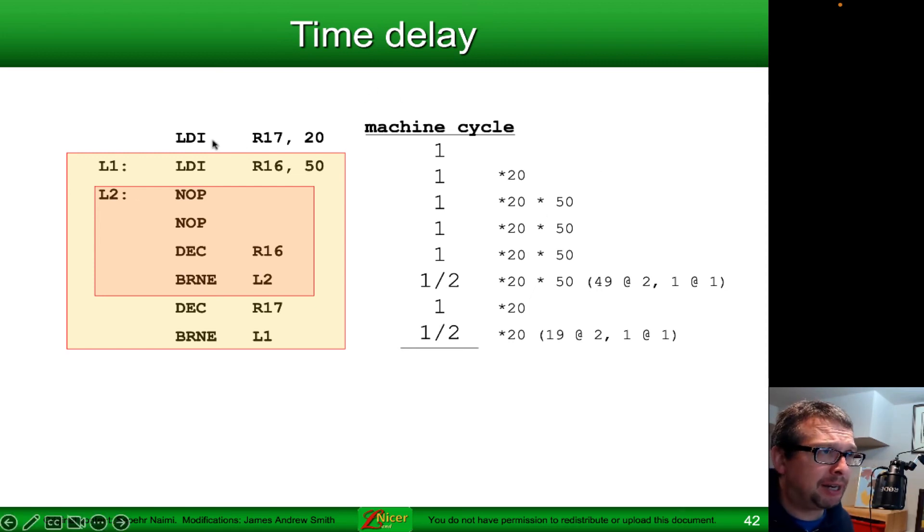The initial setup takes one cycle. The second setup is done 20 times. So that takes 20 clock cycles. The inner loop is even more complicated. The first nop is done 20 times, times 50. So it's actually a thousand times. The nop here is also done a thousand times. That decrement is done a thousand times. The branch if not equal here on the inner loop is also done a thousand times.